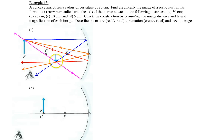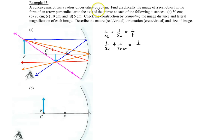Let's check our construction by computing the image distance and the magnification for the image. We'll use our equation relating the image distance, the object distance, and the focal length, and then make the substitutions. The image distance is what we're looking for. The object distance given in this problem is 30 centimeters, and the focal length — since the radius of curvature is 20 — is 10 centimeters. Plugging that into the calculator, you get an image distance of 15 centimeters.